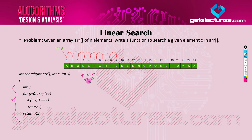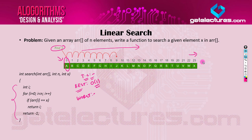The time complexity is easy to determine. In the best case, we search for an element and find it at the very first index location, so the time complexity is O(1). The worst case is when we traverse the entire array and still cannot find the element, or the element is at the last index location. In that worst case, the loop runs from beginning to end, so the time complexity is O(n).